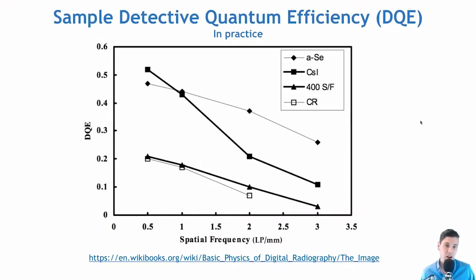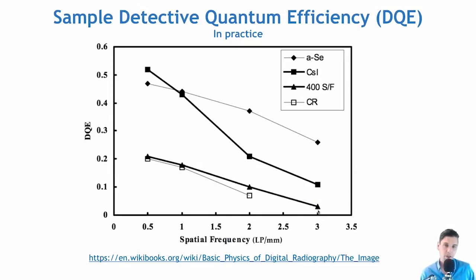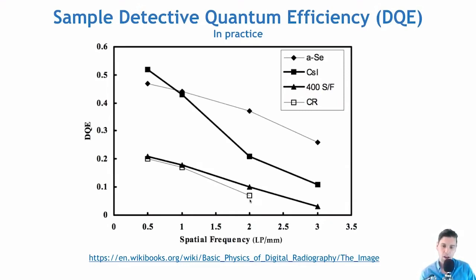To show a sample case, we compare a few detector technologies for x-ray imaging. The standard screen-film case shows a given DQE that decreases significantly as a function of spatial frequency. Computed radiography — where the signal is stored, then read out with a laser — shows a comparable DQE to screen film across those frequencies.